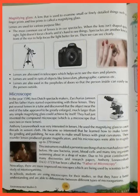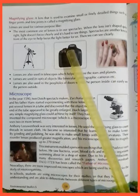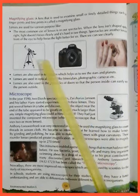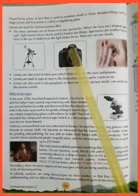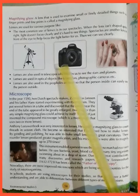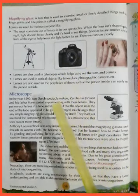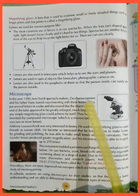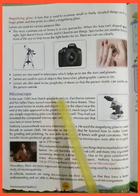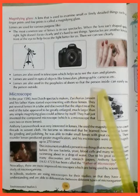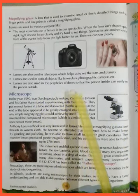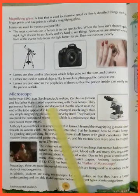Lenses are used for various purposes. The most common use of lenses is in our specs. When the lens isn't shaped quite right, light does not focus clearly and it's hard to see things. Specs place another lens in front of the eye to help focus the light better so we can see clearly. Lenses are also used in telescopes to see the stars and planets, and in optical instruments like binoculars and photographic cameras. They are also used in the peepholes of doors so the person inside can easily see the person outside.